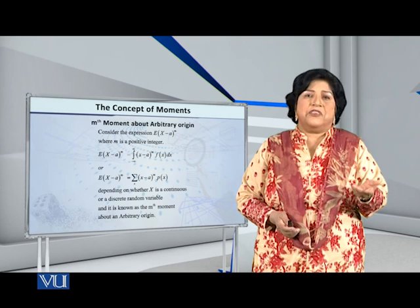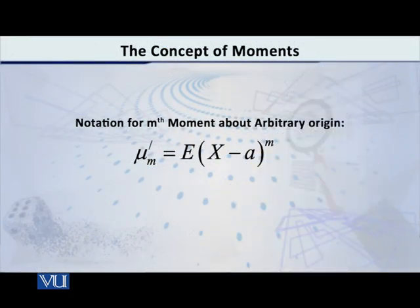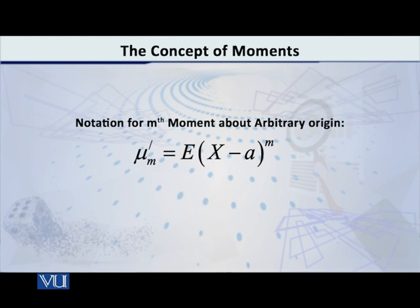Note that this is an arbitrary origin — a is an arbitrary real number. The notation for this kind of moment is denoted by mu-m with a dash or prime on top, written as mu-m prime. The dash is attached because it is about an arbitrary origin. So we will have mu-1 prime, mu-2 prime, mu-3 prime, and so on.